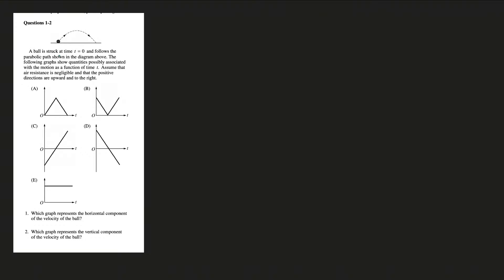The first question: a ball is struck at time t equals 0 and follows a parabolic path shown in the diagram. The following graphs show quantities possibly associated with the motion as a function of time t. Assume that air resistance is negligible and that positive directions are upward and to the right. Which graph represents the horizontal component of the velocity of the ball?